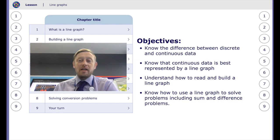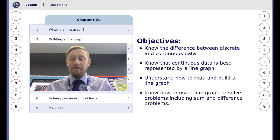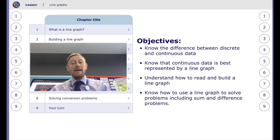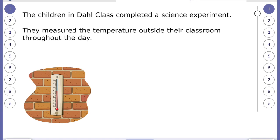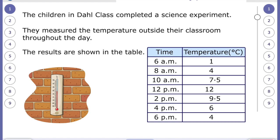We're going to know that continuous data is best represented in a line graph. We're going to also find out how to read a line graph and how to construct one as well. We're going to look at different types of graph and we can see that the children in Dahl class completed a science experiment and what they did was they measured the temperature outside their classrooms throughout the day and recorded it in a table as you can see here.